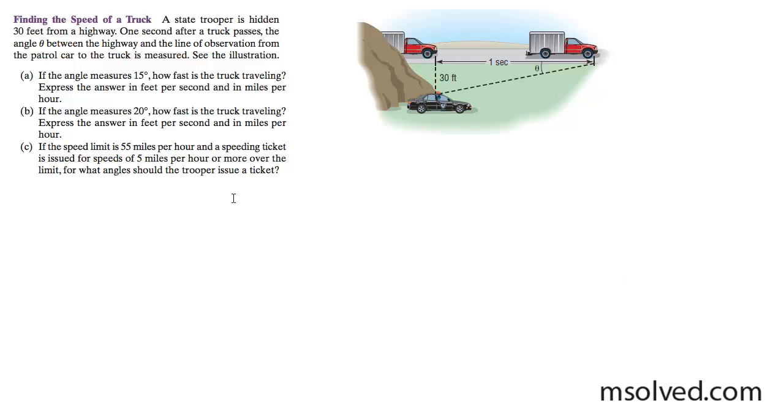So we've got this highway state patrolman hiding off in the bushes here, a very common thing that can be applied to real life. What happens here is one second goes by, this truck started here, and its front tire is over here after one second. And depending on the angle that is right here, that's going to determine how fast it's going.